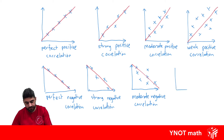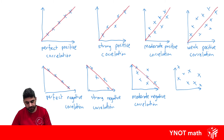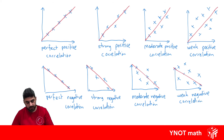Finally, a weak negative correlation is when it's really spread out but going in the negative direction — maybe even slightly more spread out. This will be a weak negative correlation. We can also have data that's just scattered everywhere, and this will be no correlation.